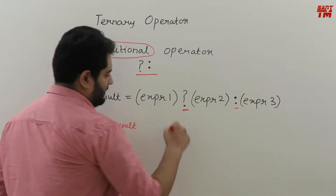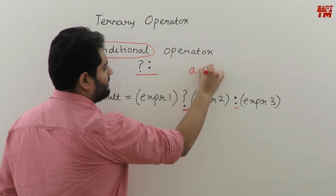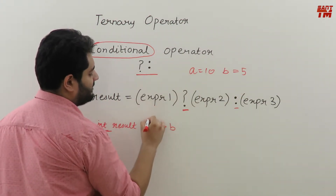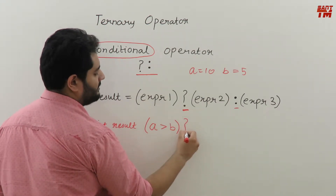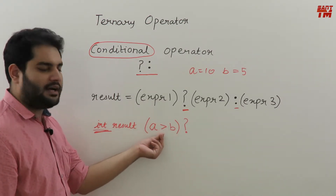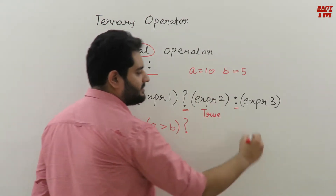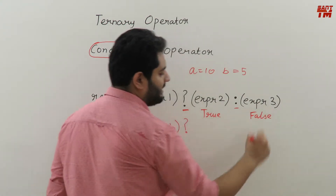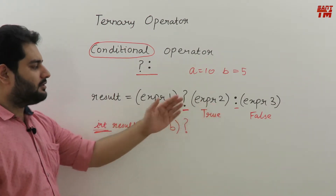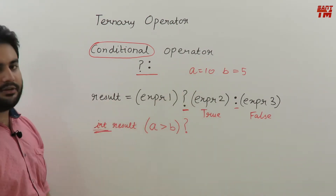What happens exactly is: expression one will be evaluated. Suppose a equals 10 and b equals 5. If I write a is greater than b as expression one, and check with the question mark — this question mark means it will check whether a is greater than b or not. If the answer is true, expression two will be executed; if the answer is false, expression three will be executed. The result will be assigned to the result variable accordingly.